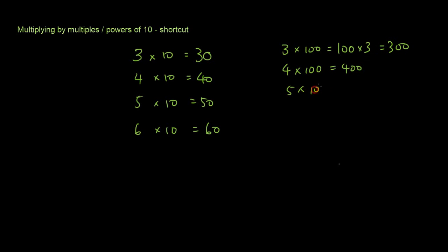5 times 100 is 500 and so on. So when you multiply a number by a power of 10, a power of 10 just means 10, 100, 1000, 10,000 and so on. Sorry, it's sort of confusing that I've put a comma here. Let me just get rid of that.